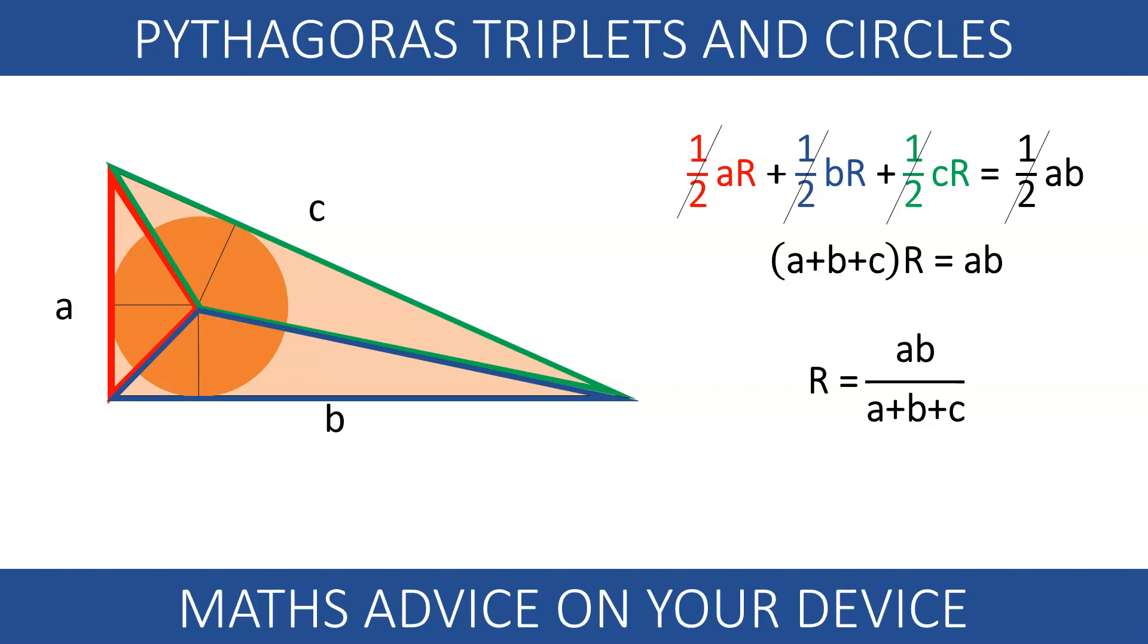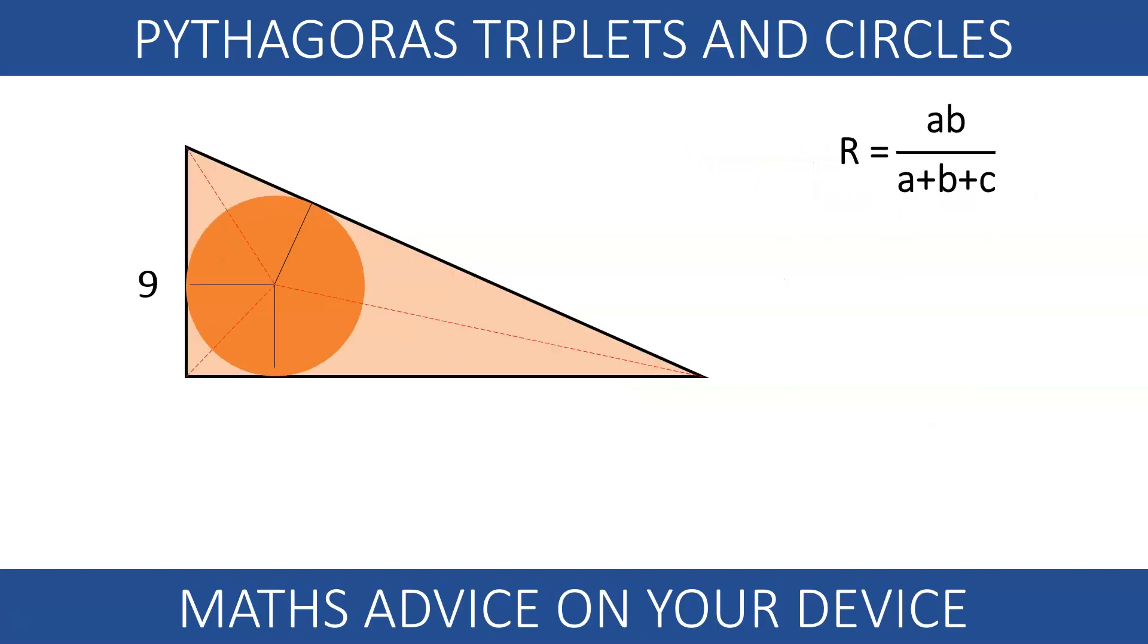To find our next triplet, we know that the shortest side is going to be 9. We explained this in our previous video Pythagorean triplets.